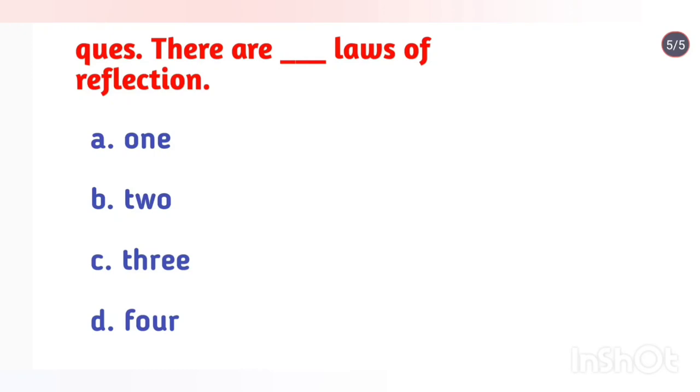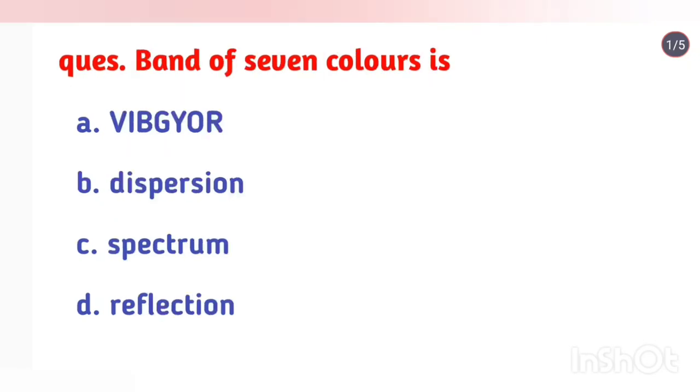There are how many laws of reflection? There are two laws of reflection. The band of seven colors is spectrum.